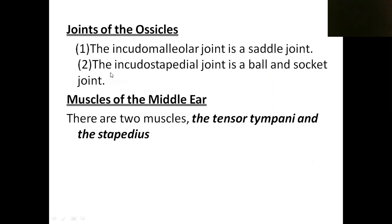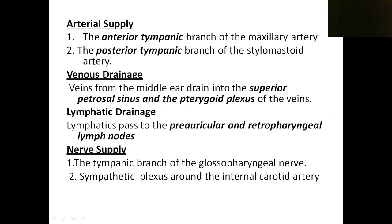These bones are connected by two joints. The first is the incudomalleolar joint between the incus and malleus — it is a saddle joint. The second is the incudostapedial joint between the incus and stapes — it is a ball and socket synovial joint. There are two muscles inside the middle ear: the tensor tympani muscle and the stapedius muscle. The stapedius is seen inside the pyramid in the posterior wall, and the tensor tympani is in the anterior wall.